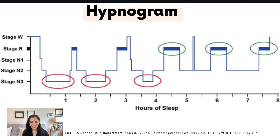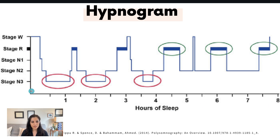This is what a hypnogram looks like — a textbook diagram. It's a representation of sleep architecture across the night; it looks like a skyline. On the x-axis we have time, measured in hours of sleep. On the y-axis we have sleep stages, starting from wake or stage W, then a bar representing REM sleep, then non-REM stages 1, 2, and 3, progressively lighter to deeper.